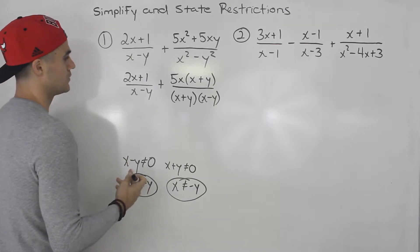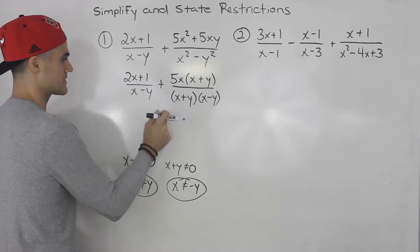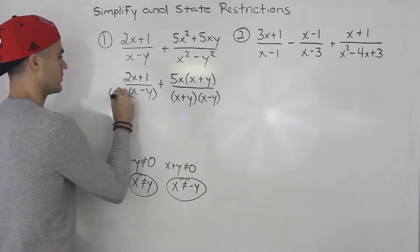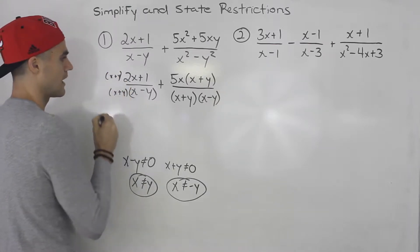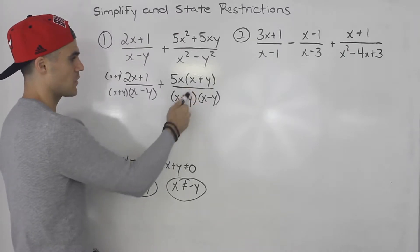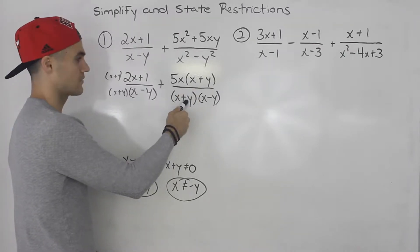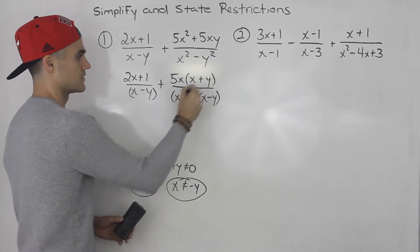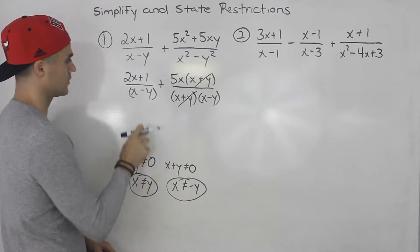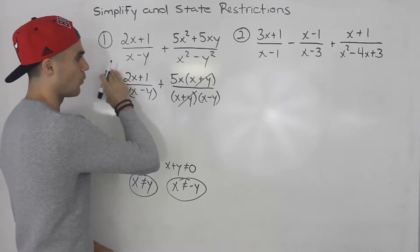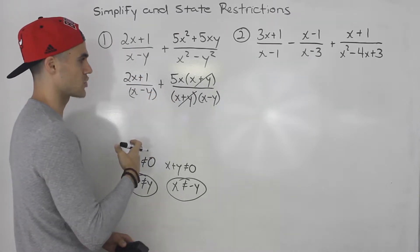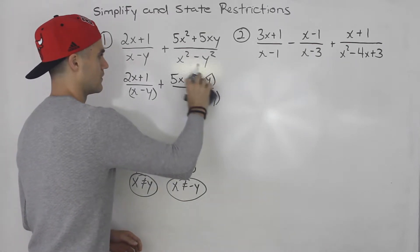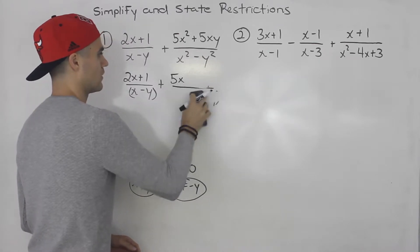Now we simplify. Usually we'd find a common denominator, but notice here the lowest common denominator would require multiplying the first expression by x plus y. However, x plus y appears in both the numerator and denominator of the second rational expression. So instead, we can simplify that second expression first — and sometimes that happens, so be on the lookout. After those x plus y's cancel, we're left with 5x over x minus y.